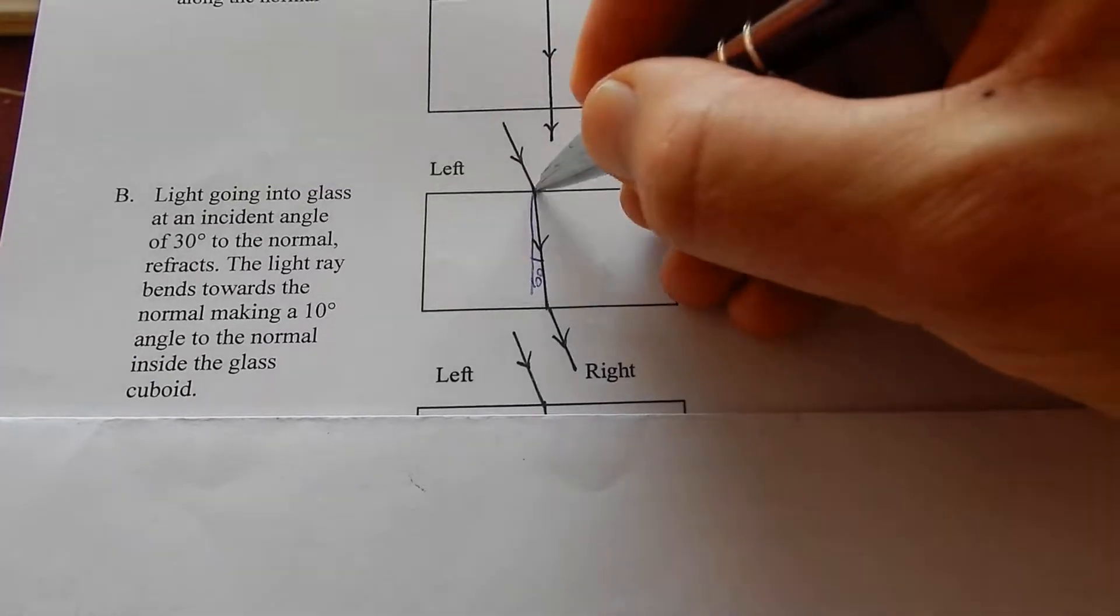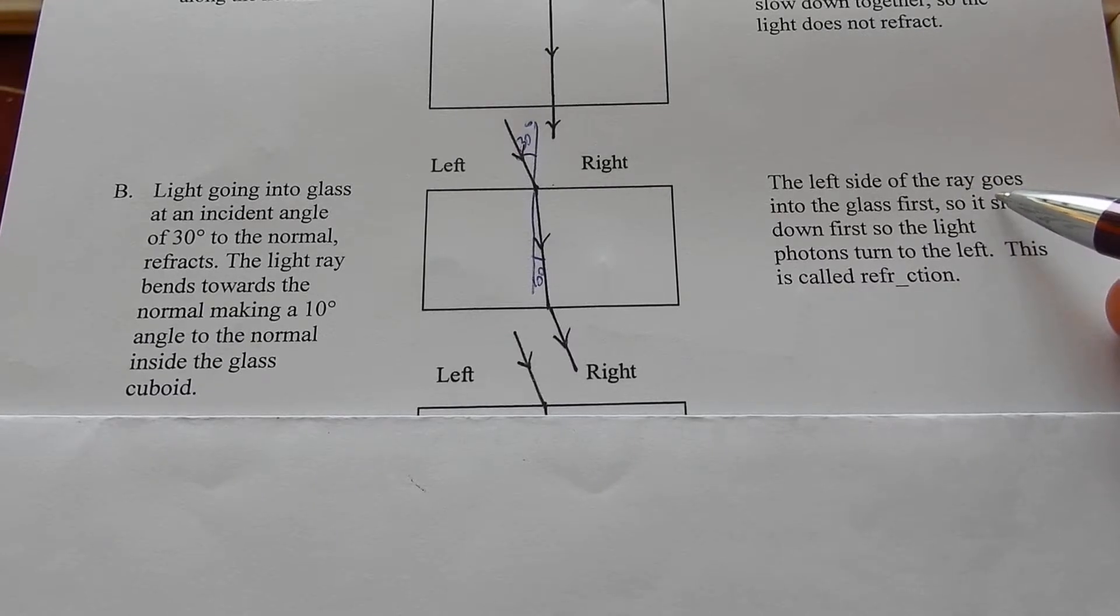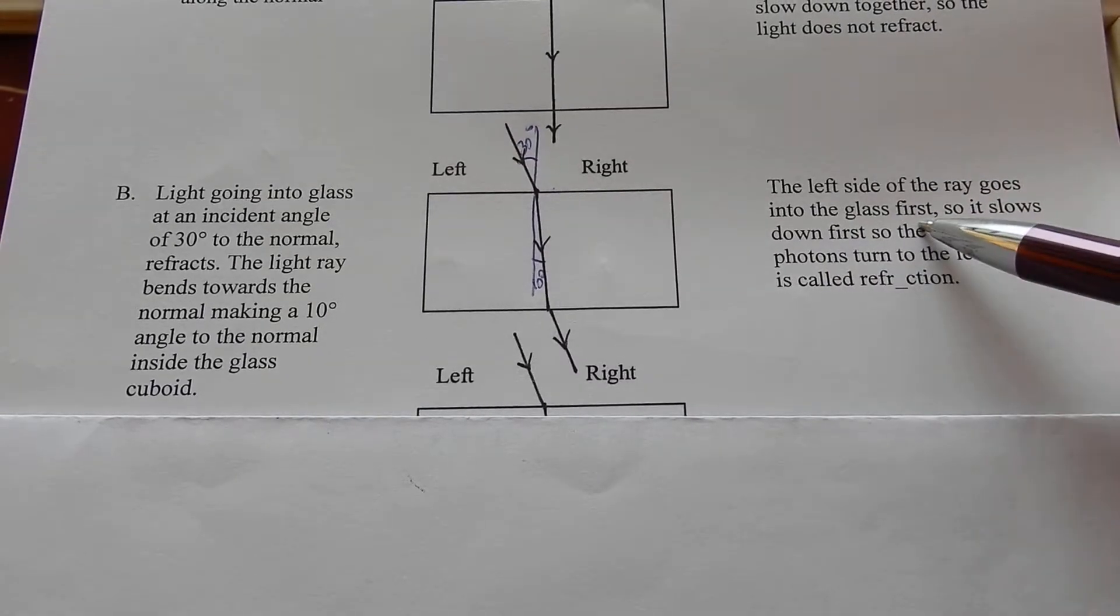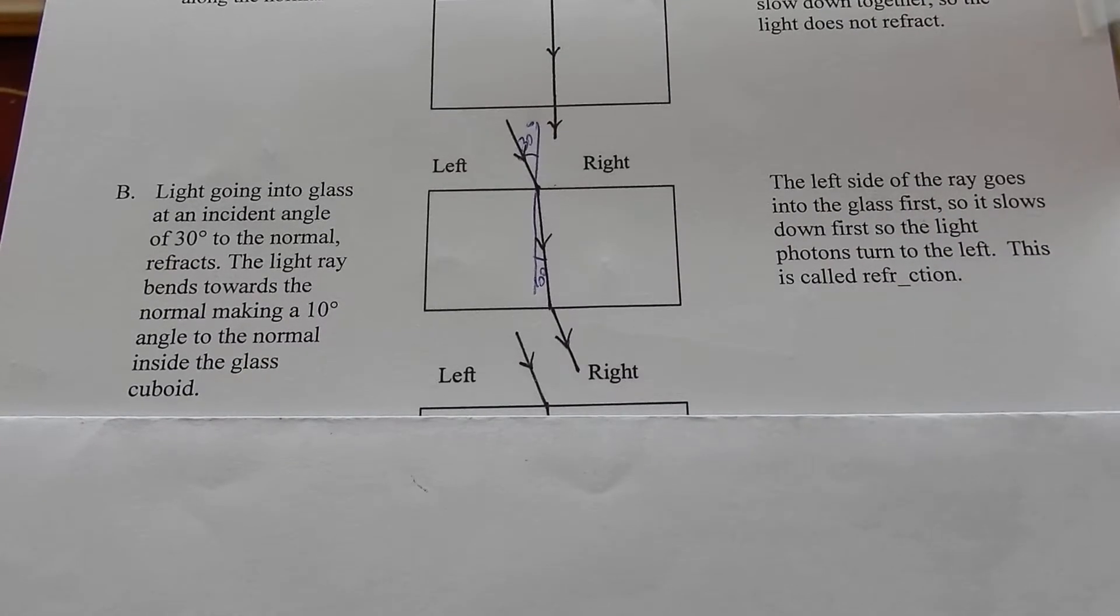That's about 10 degrees. And that should be 30 degrees. The left side of the ray goes into the glass first. So it slows down first.